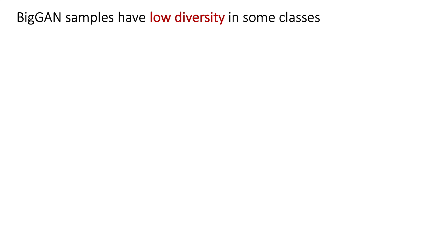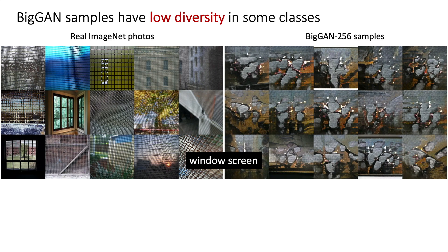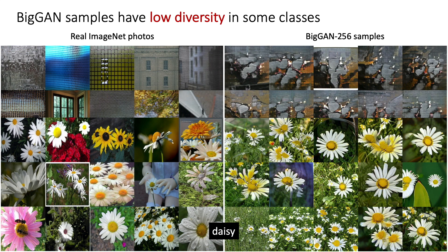For example, compared to the real photos of window screens, the generated samples appear unrealistic and similar. While real daisies appear in multiple colors and a variety of backgrounds, the generated images are mostly white daisies on green grass.